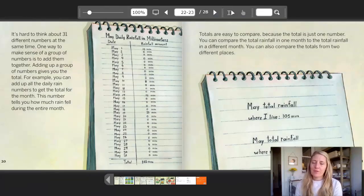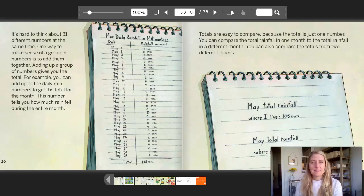It's hard to think about 31 different numbers at the same time. One way to make sense of a group of numbers is to add them together. Adding up a group of numbers gives you the total. For example, you can add up all the daily rain numbers to get the total for the month. This number tells you how much rain fell during the entire month. Notice at the bottom they added the total 105 millimeters.